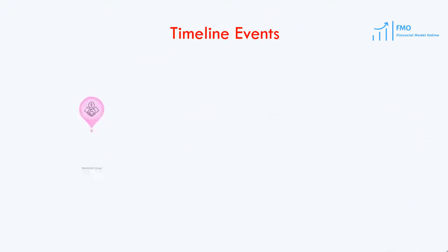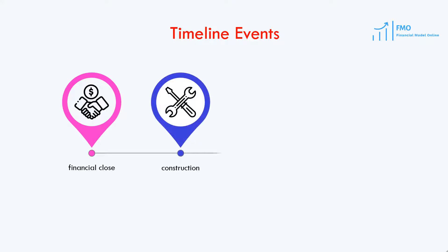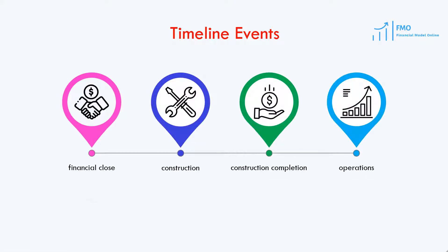Our project finance model will have to incorporate four events: financial close, construction, construction completion, and operations. At the financial close, the construction debt and equity become available for drawdown, and this is when we begin the construction of the renewable energy project.